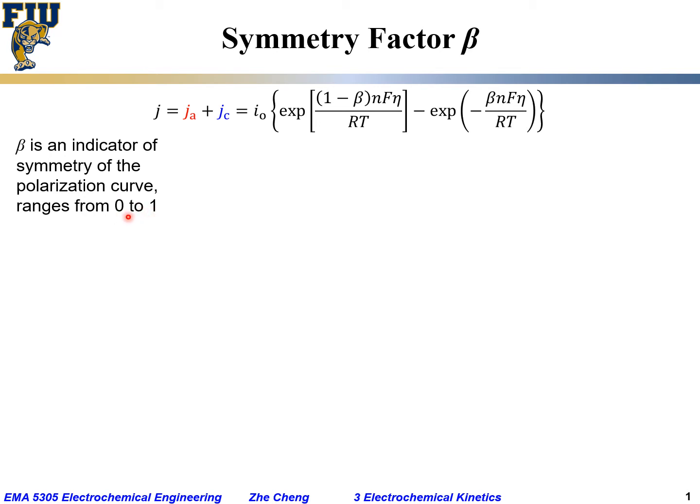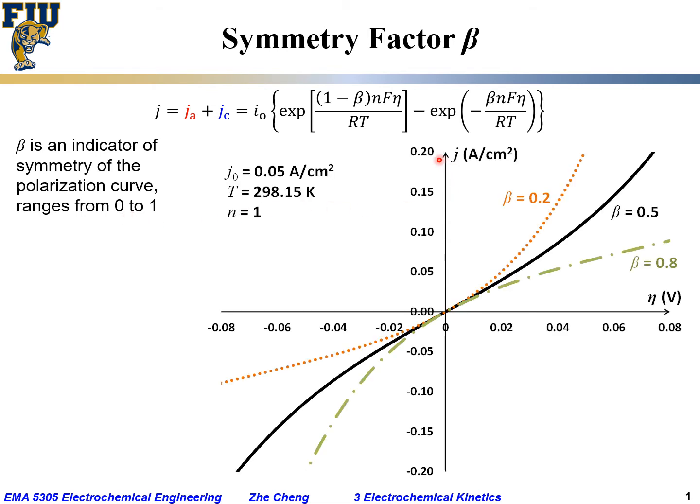Actually, much closer to 0.5. And here we plot current density versus overpotential under this condition: a fixed J0 exchange current density of 50 milliamp per square centimeter, temperature of 25 degrees C, and n equals 1.